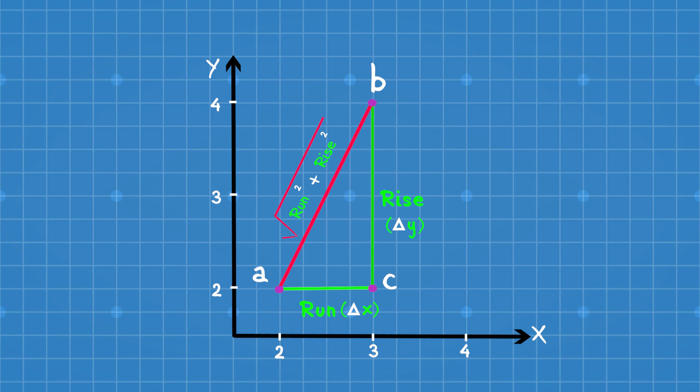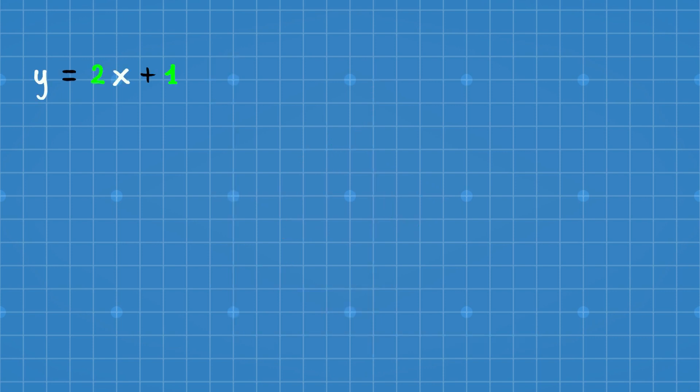So far, we had the line segment and we found out the slope. Now it's time to graph a line using slope and intercept. Let's understand with an example. In this equation, 2 is the slope and 1 is the intercept.